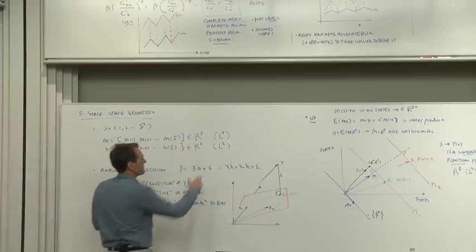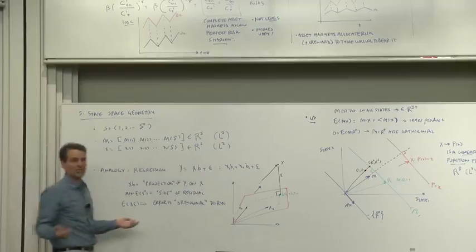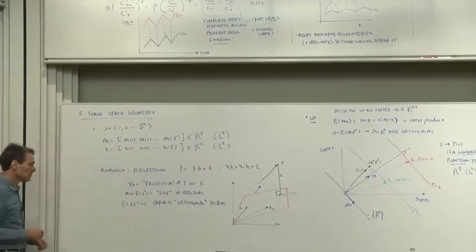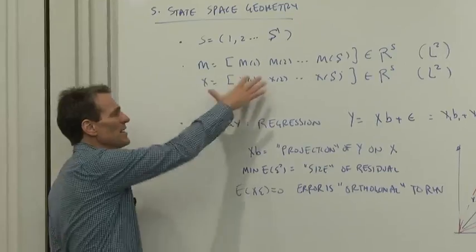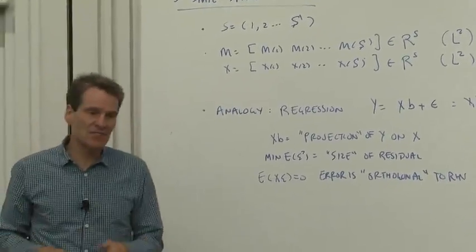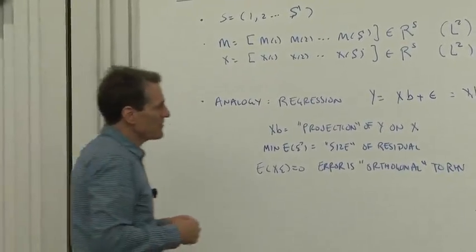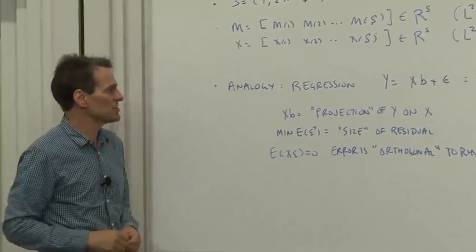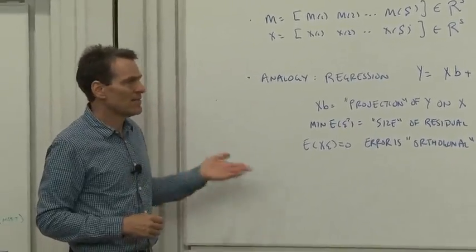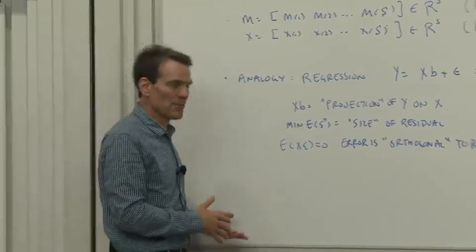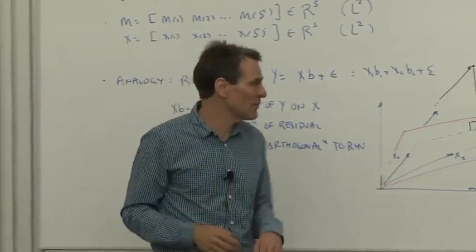And more generally, we think about random variables as vectors in a function space like L2. Now, when we think of random variables as vectors in this way, it's very useful to think about spatial relationships between them. And I want to give you an analogy that, if you're familiar with it, will make this all go down much easier.